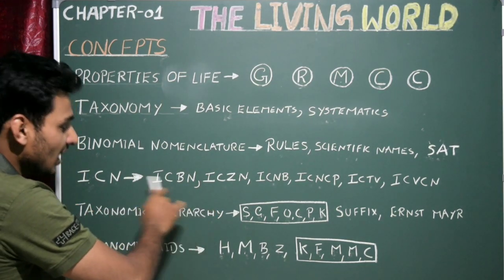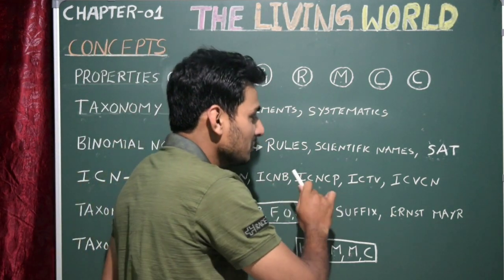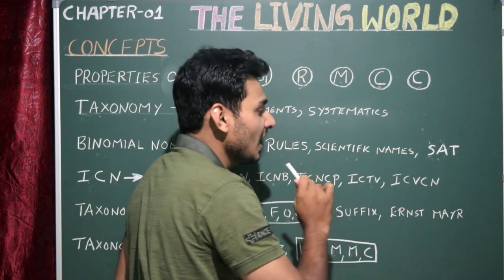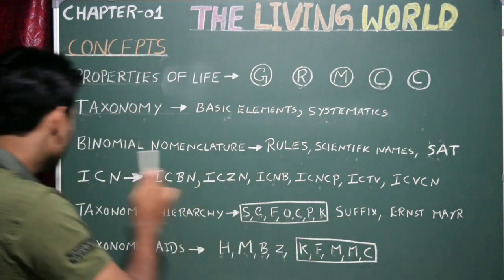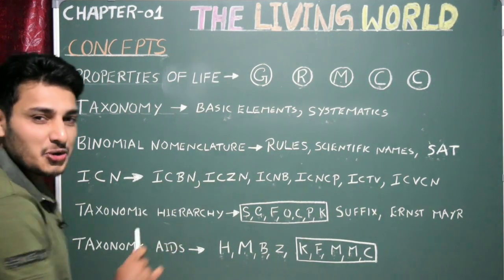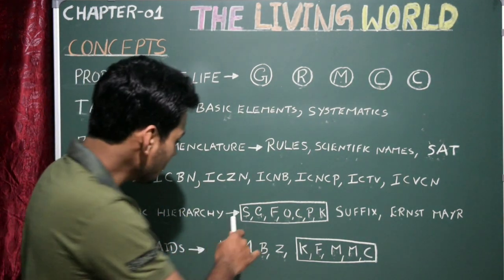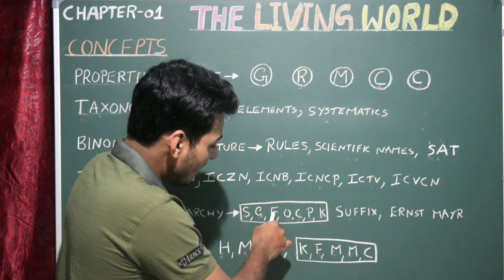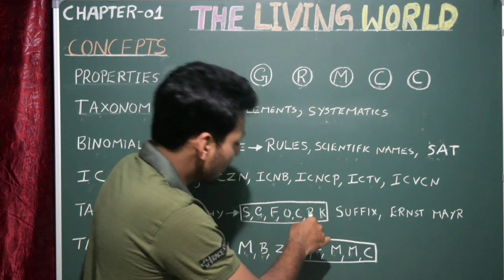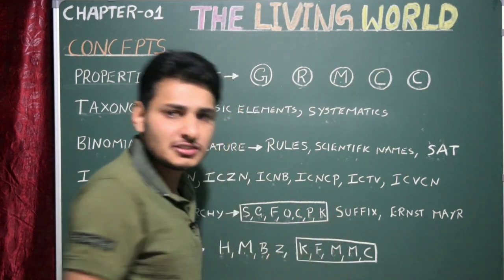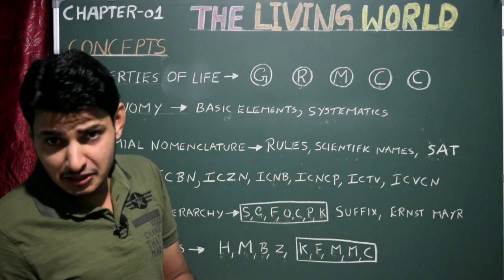Then SAT — synonyms, autonyms, and tautonyms. ICN — international code of nomenclature. Here you study ICBN, ICZN, ICNV, ICNCP, ICTV, and ICBCN. Next we are going to study about the taxonomic hierarchy — species, genus, family, order, class, phylum, kingdom — and then the suffixes of plant kingdom as well as animal kingdom.